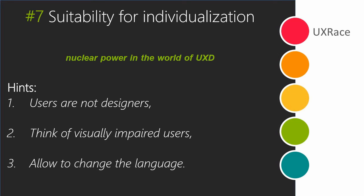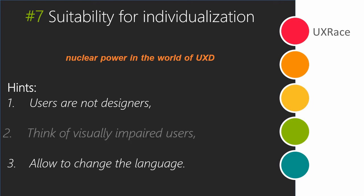The last dialog principle is suitability for individualization — and this is actually the nuclear power in the world of user experience design, because it is extremely powerful and could be used for both evil and good. You might think: 'We provided users with the ability to change the layout, so we don't have to waste time on layout design — because users know better.' Actually, they don't. They are not designers and they don't know your product as well as you do. For individualization, think of visually impaired users, and if appropriate, allow the user to change the language.